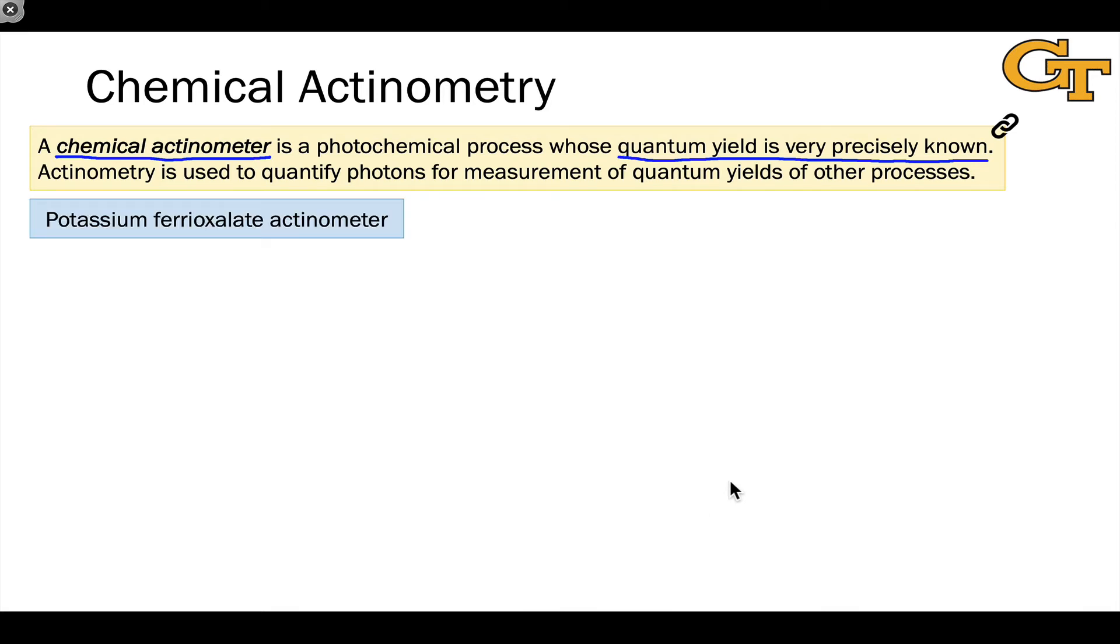We'll look at how this plugs in to an actual experiment to measure a quantum yield in a second. But I wanted to start by covering a very common, very popular, and very classic example of a chemical actinometer. I actually have direct experience with this, as we've taught a lab in the first-year chemistry labs at Georgia Tech.